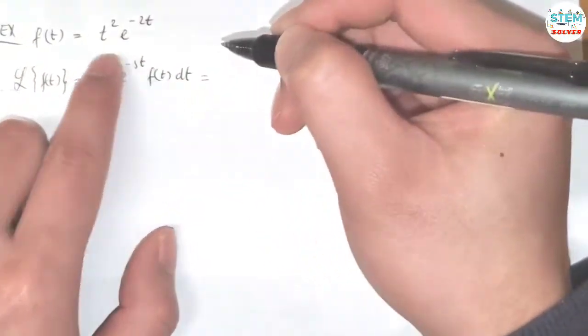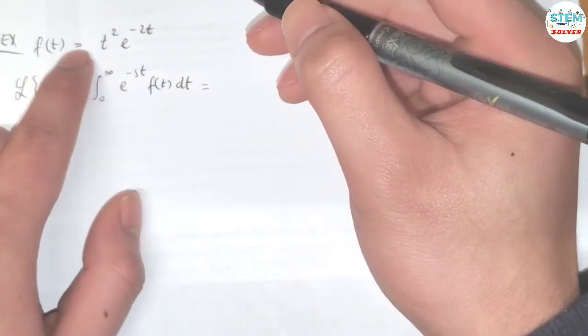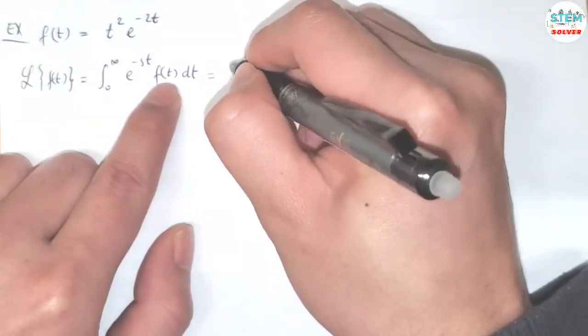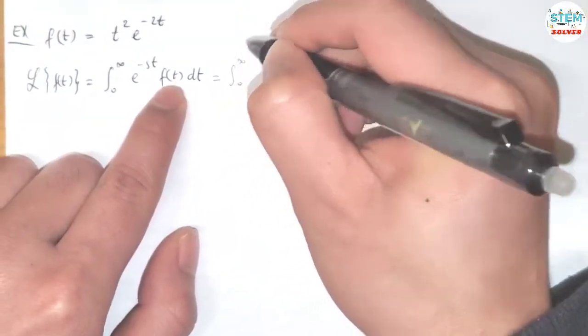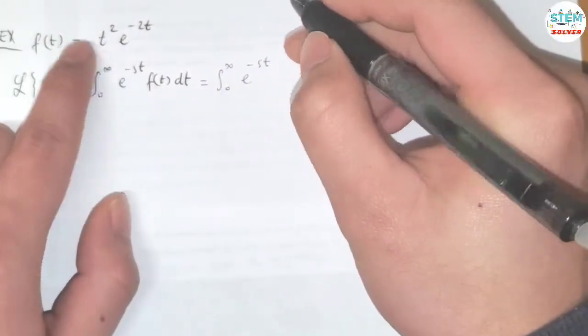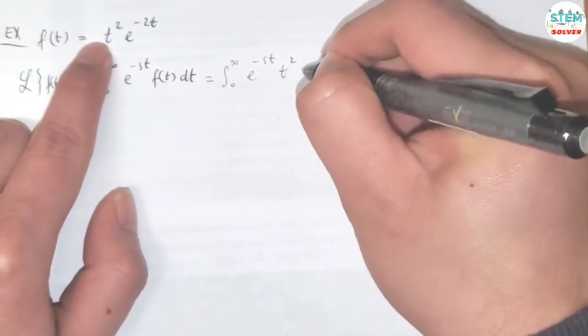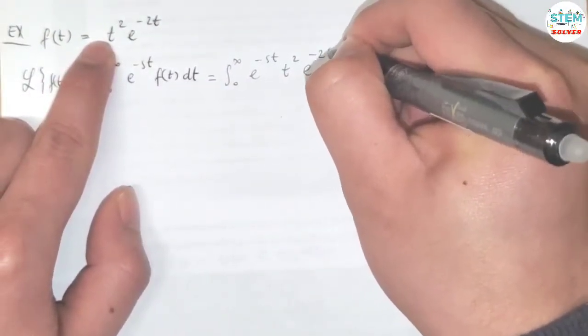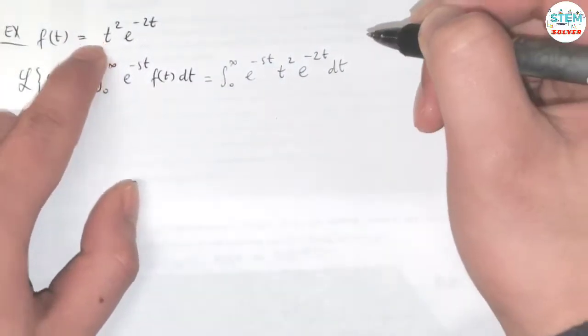So whatever f of t is, you just plug it into here. So we have the integral from 0 to infinity of e to the negative s times t, times t squared e to the negative 2t, dt.